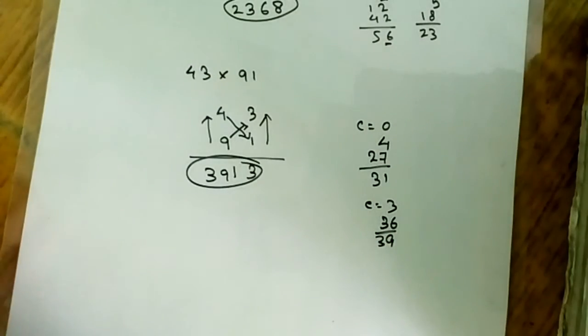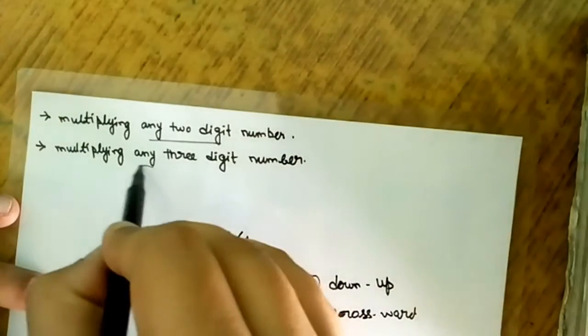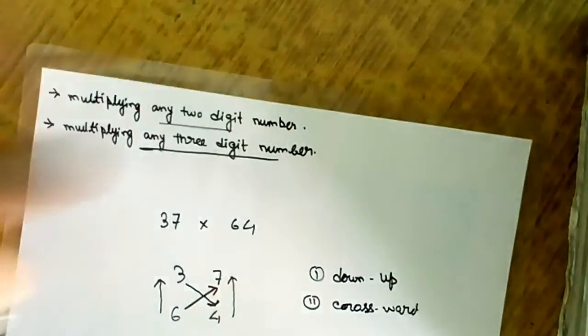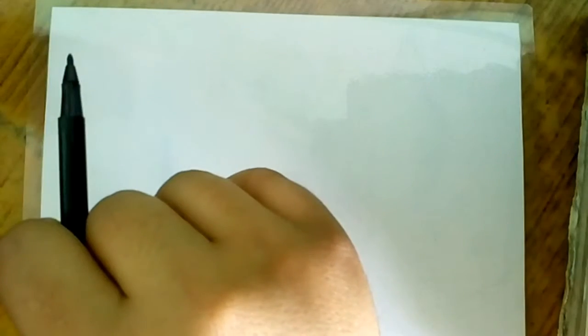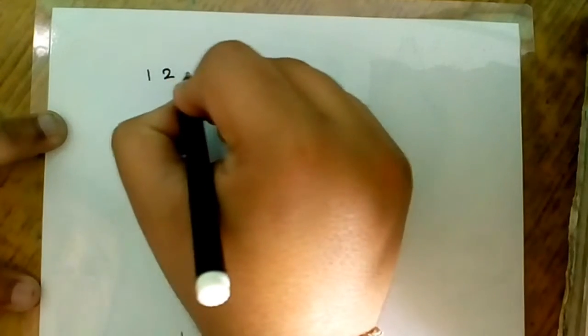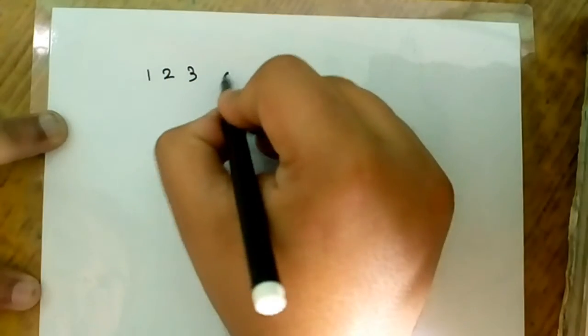Now let's begin with multiplying any three digit number. The process will be the same, but as this is a three digit number you have to follow the same steps but with multiple variations. Now let's consider any three digit number: 123 into 789.